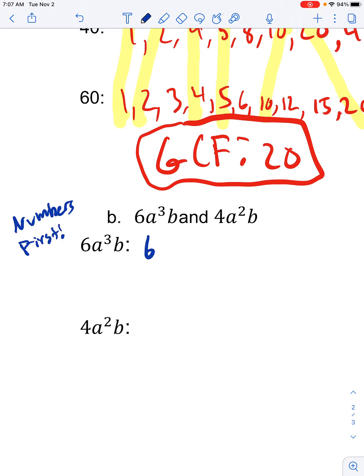So, I see I've got the number 6. So, I'm going to say, all right, this is 1 and 6, 2 and 3. And then I'm going to jump down, and I'm going to look at my other numbers, which is 4. So, I've got 1 and 4, 2 times 2. So, if just looking at my numbers, I know that my GCF between 6 and 4 is going to be 2.